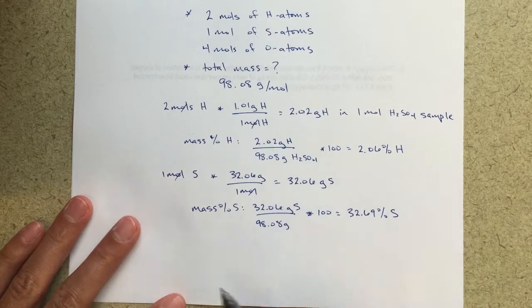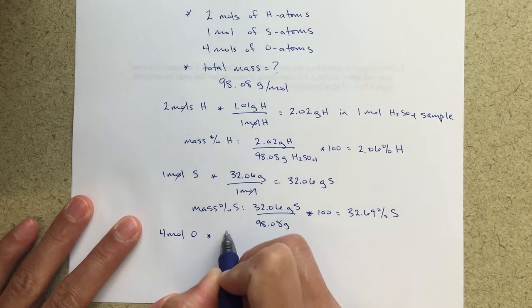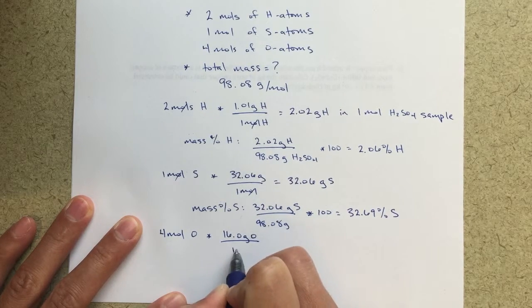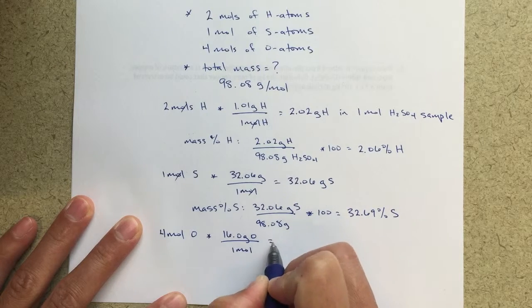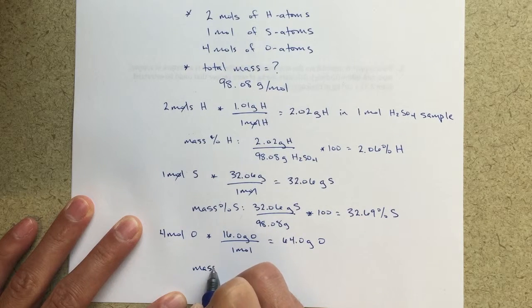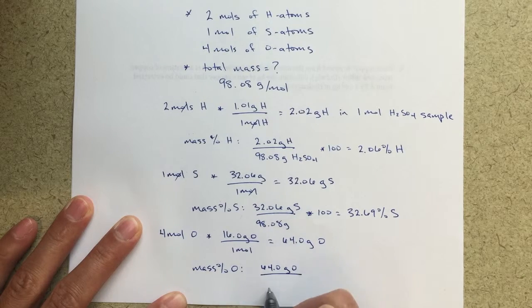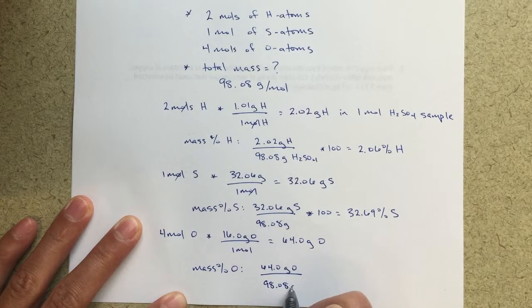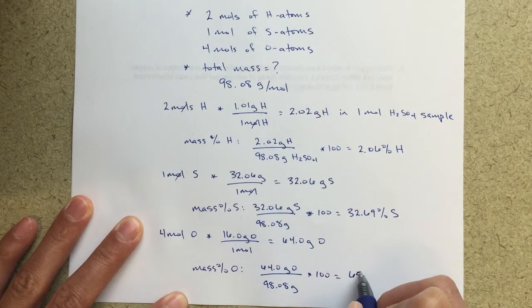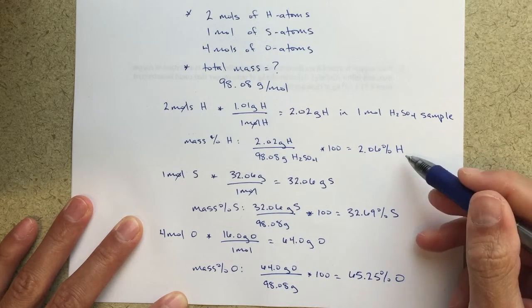So I want to just go ahead and show the same type of calculation. I would take four moles of oxygen now in this case. Multiply that by 16.0 grams of oxygen for every one mole. That's going to equal 64.0 grams of oxygen. And again, to find the mass percent of oxygen, 64.0 grams of oxygen over the total 98.08 grams. Again, multiply by 100. That should equal 65.25% oxygen.